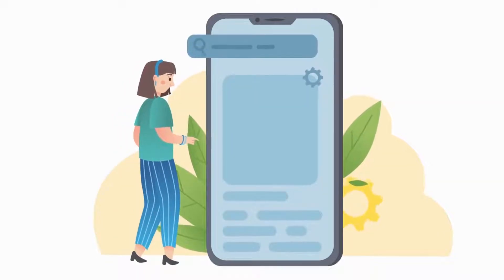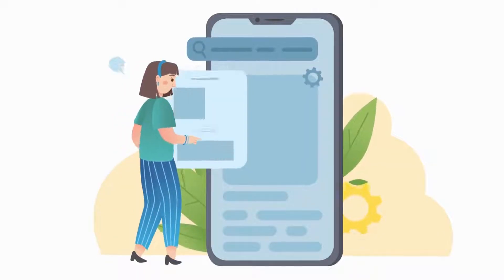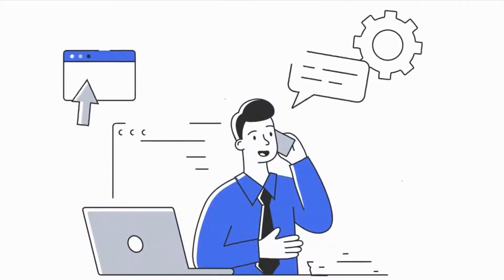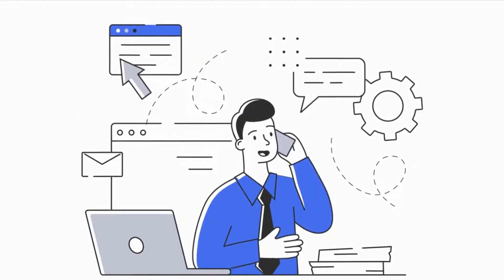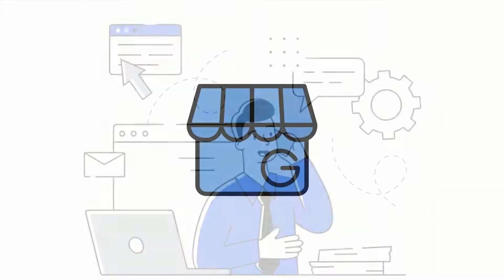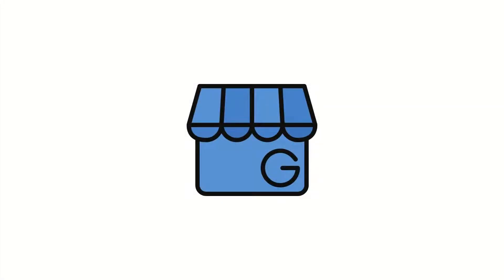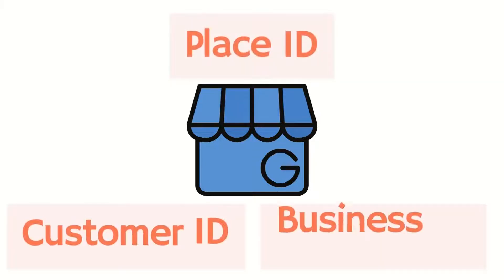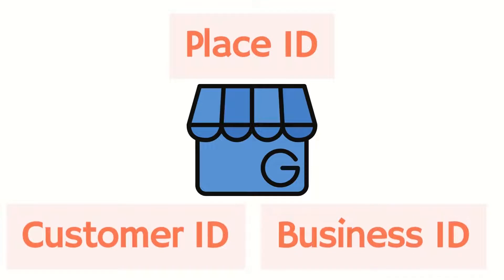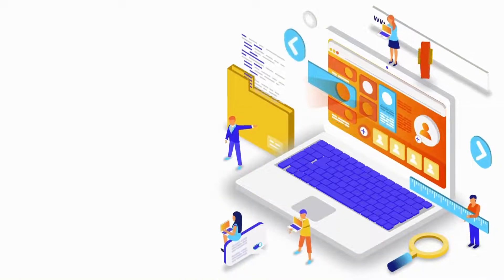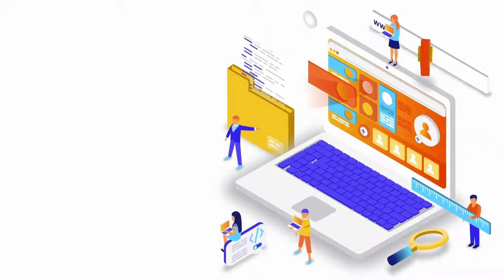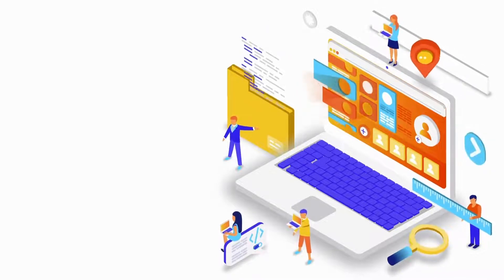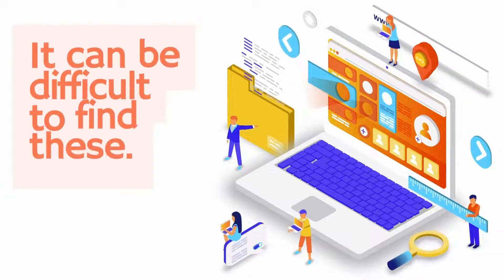If you have a website or a mobile app that needs your business location, or you need to reach Google support for your GMB profile concerns, you need several GMB information about your business to successfully integrate with Google Maps. This includes place ID, customer ID, and your business ID. There are multiple ways to get this information, but if you are not a technical person, it will be painful to do so.